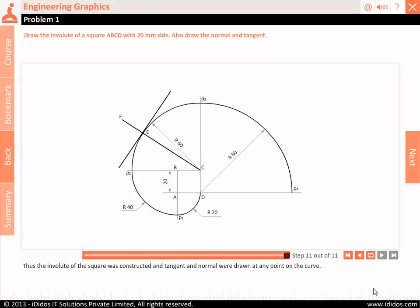Thus, the involute of the square was constructed and tangent and normal were drawn at any point on the curve.